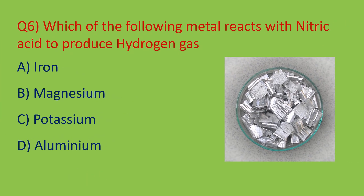Question number six: which of the following metals reacts with nitric acid to produce hydrogen gas? Nitric acid is a strong oxidizing agent. When nitric acid reacts with most metals it produces water and salts, but some metals — magnesium and manganese — react with nitric acid to produce hydrogen gas. Out of the options iron, magnesium, potassium, and aluminum, magnesium is the correct answer — option B.